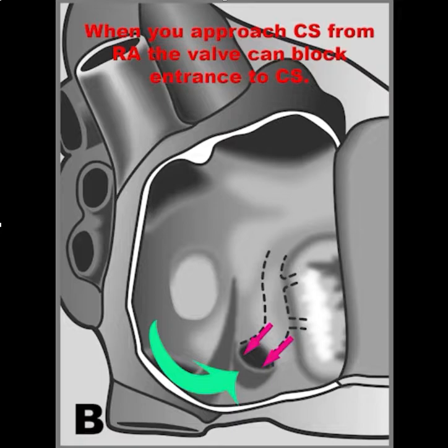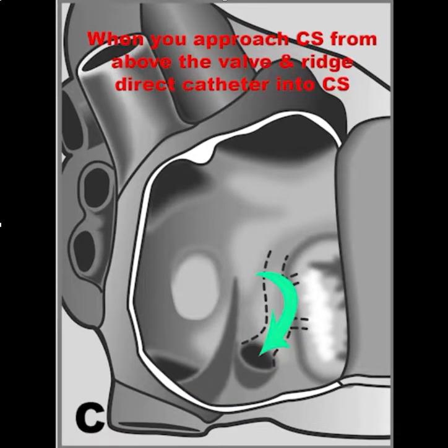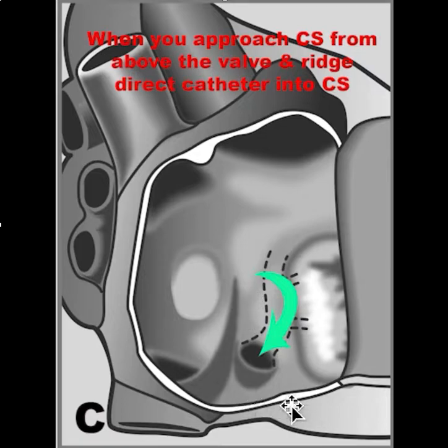On the other hand, if you drop down the annulus, then the ridge and the valve direct the catheter into the coronary sinus.